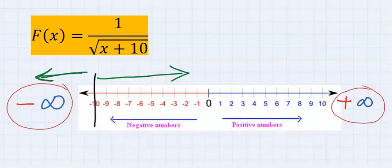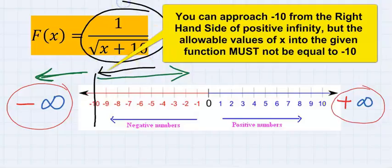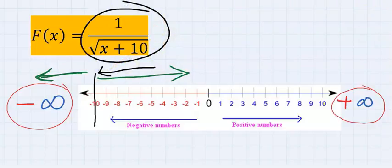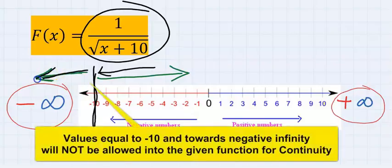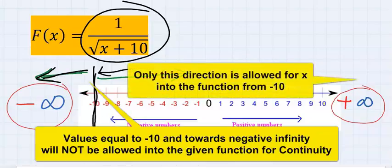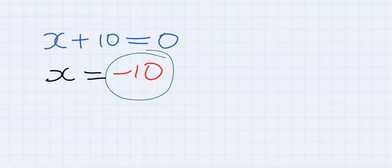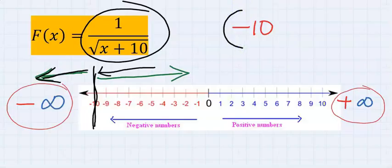Hence, it means that we can approach but we can never get to minus 10 for this function to be continuous. As soon as we get to minus 10 and we move towards this direction, this function will discontinue. This means that minus 10 we obtained when we solved this function must be excluded.